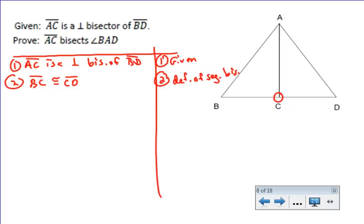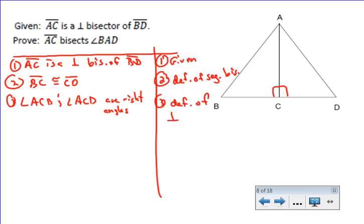Then it tells you it's a perpendicular bisector, so not only is C the midpoint, but at point C you've got two right angles. So we can claim that angle ACB and angle ACD are right angles because those are right angles just by definition of perpendicular lines. That's what it means to be perpendicular: two segments that meet at right angles.